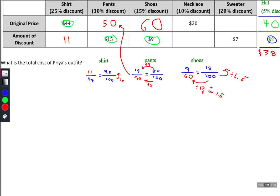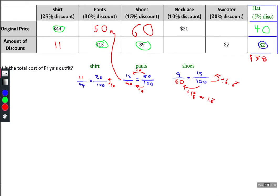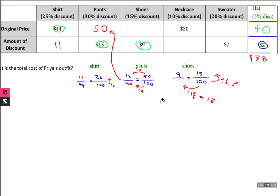Then came the shoes example. The shoes had a 15% discount, so I had 15 over 100, and nine dollars as the discount amount. We were trying to solve for the original price, which is 60. When we looked at this pattern, you could go back and forth between fractions to find a rate, or go from numerators to denominators to find a rate.